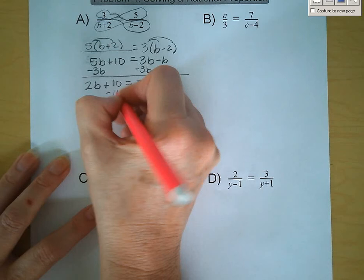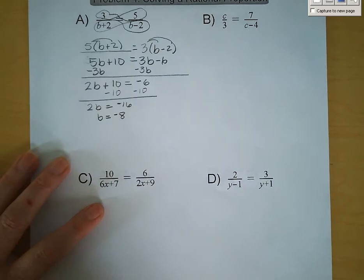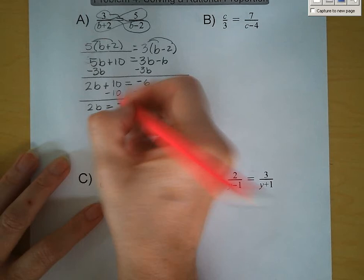Subtract 10 from both sides: 2b is equal to negative 16. Divide by 2, and b is equal to negative 8. With these problems, make sure you guys circle your answers because they will be hard to find.